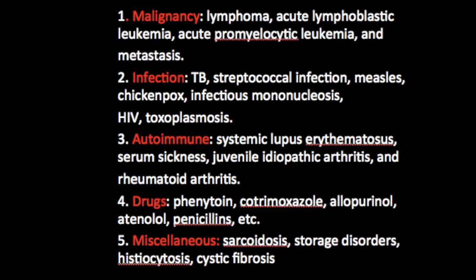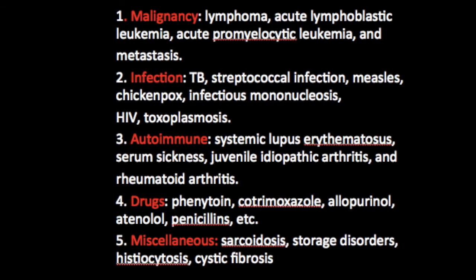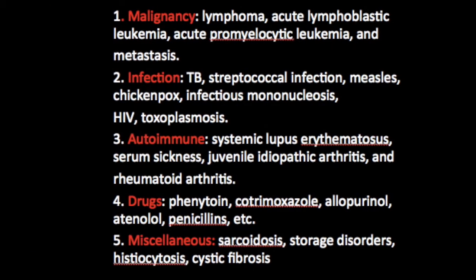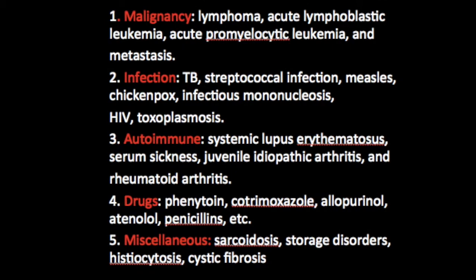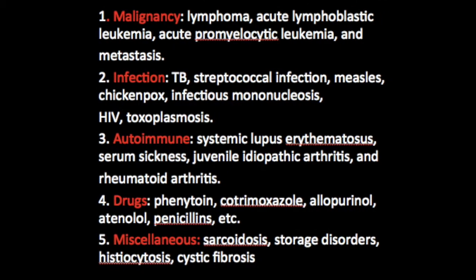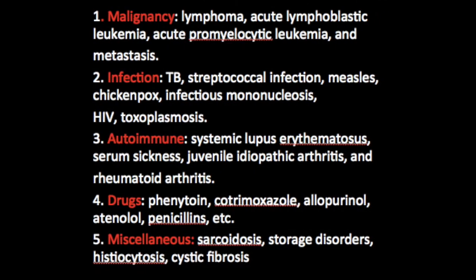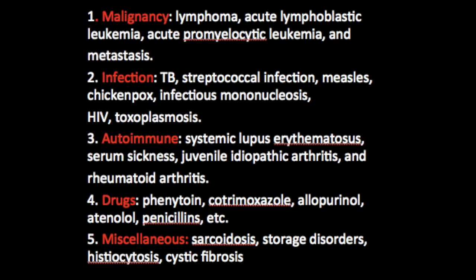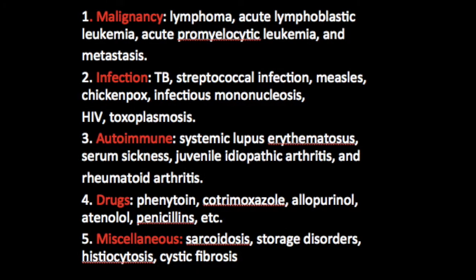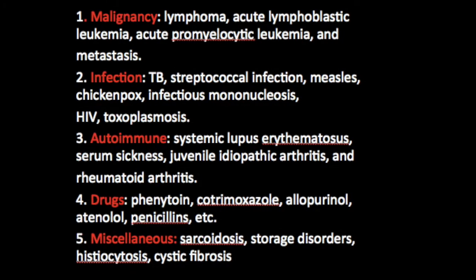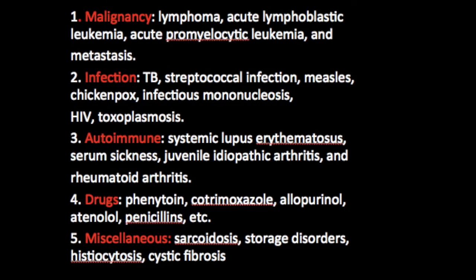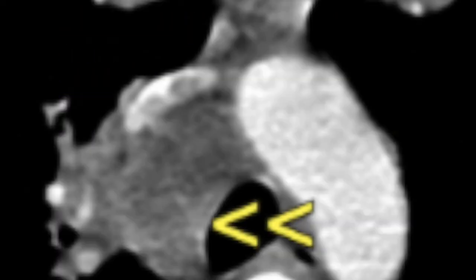Of these, it is only tuberculosis that gives rise to a very specific pattern of enhancement. It gives rise to an inhomogeneous pattern of enhancement with peripheral enhancement as well as central caseation necrosis, because of destruction of the lymph node at its central aspect.